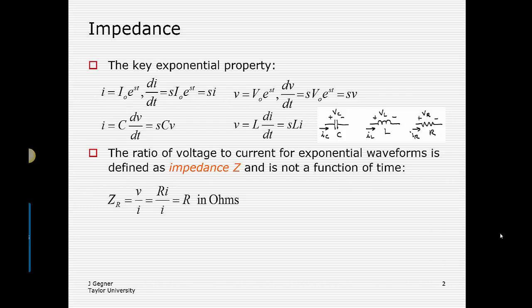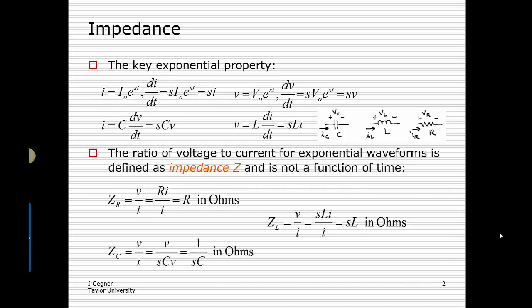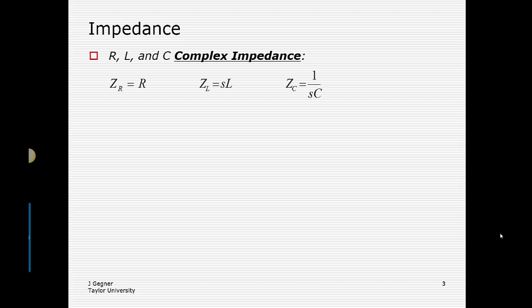So Zr, the impedance of a resistor, doesn't actually change — it's still just R, in ohms. The impedance of an inductor becomes sL, also in ohms. And the impedance of a capacitor is 1 over sC, also in ohms. Sometimes you'll see these referred to as complex impedance; other times we'll just say impedance.